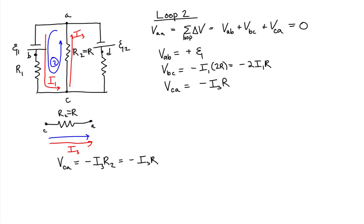And now Kirchhoff's Law from A back to A in loop 2 is again the potential from A to B plus the potential from B to C plus the potential from C to A. That must sum to zero.